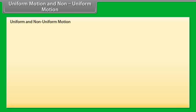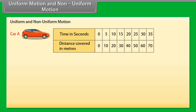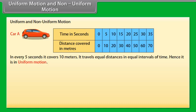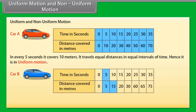Uniform motion and non-uniform motion: To understand these concepts, let's take one example. Look at this table showing the distance covered by car A. In 0 seconds it covers 0 meters; in 5 seconds it covers 10 meters; in 10 seconds it covers 20 meters, and so on. In every 5 seconds it covers 10 meters — it travels equal distances in equal intervals of time, hence it is in uniform motion. Car B covers 5 meters in 5 seconds, 15 meters in 10 seconds, and 20 meters in 15 seconds. Car B does not cover equal distances in equal intervals of time, therefore it is in non-uniform motion.